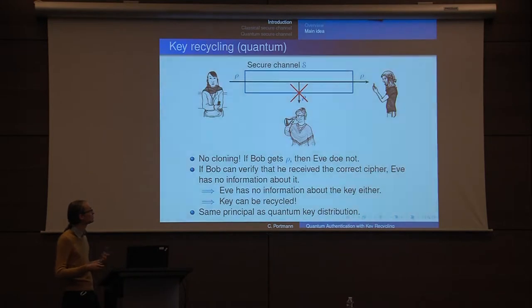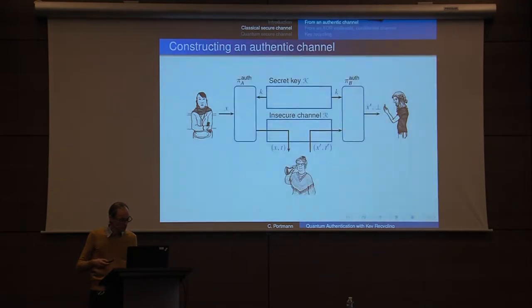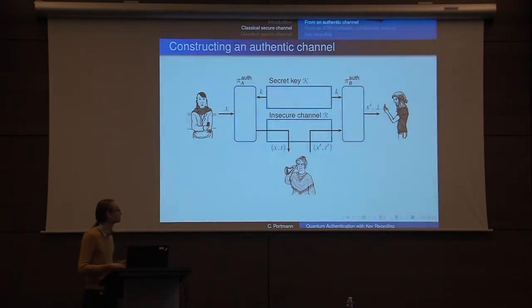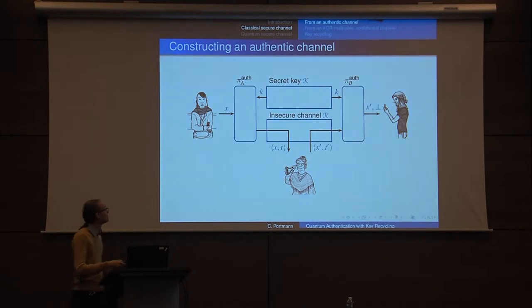Really, it's some no-cloning going on here, which is the same principle as quantum key distribution. So before telling you how to do this in the quantum case, I'm just going to go over the classical case because we're trying to construct a secure channel. We're going to do it in two parts: first construct an authentic channel, and then given the authentic channel, construct a secure channel.